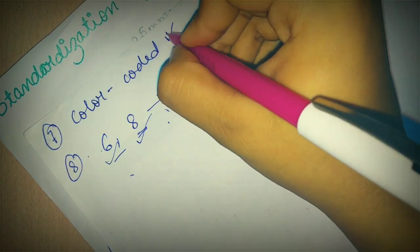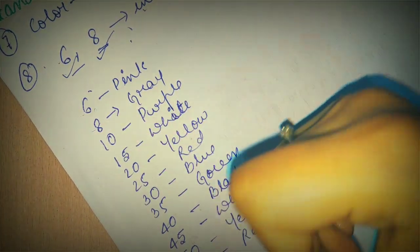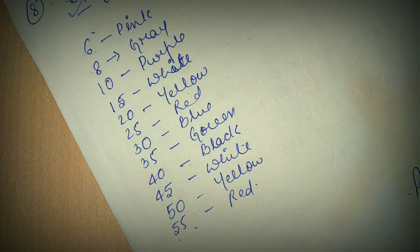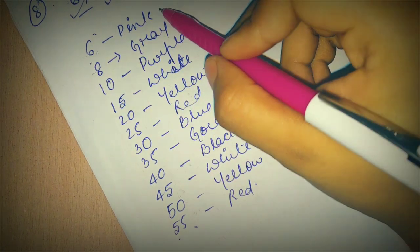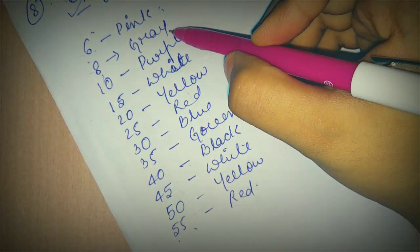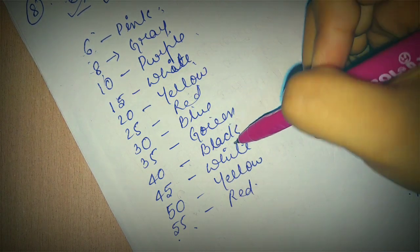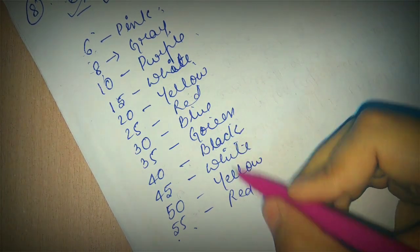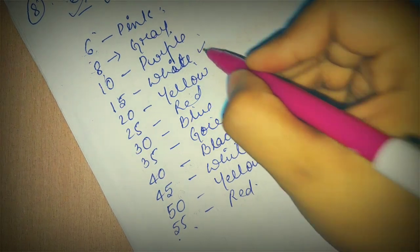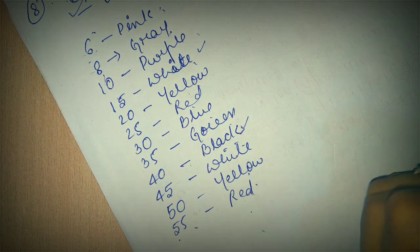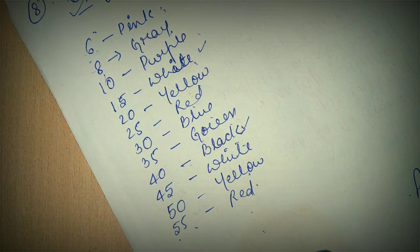Now let's look at color coding. Here I have written the number of instruments from 6 to 55 and I have written the colors. For example, this is 6th number instrument is pink, 8th number instrument is gray, 10th is purple, then white, yellow, red, blue, green, black. After black, this will repeat again. The same order from white to black it will repeat again. It will go on as white, yellow, red, blue, green, black.